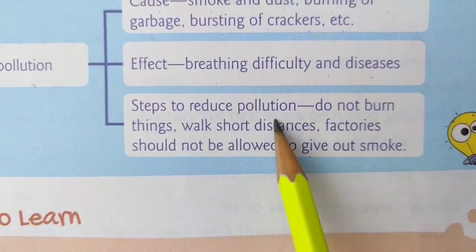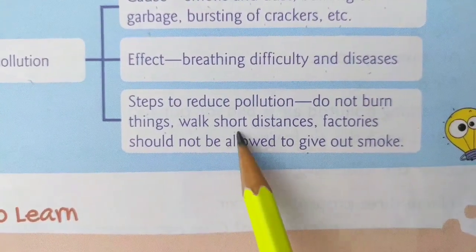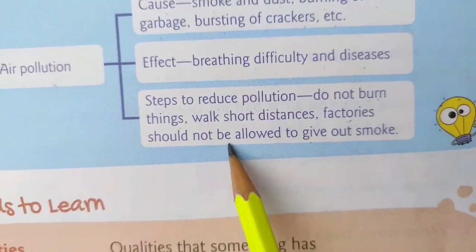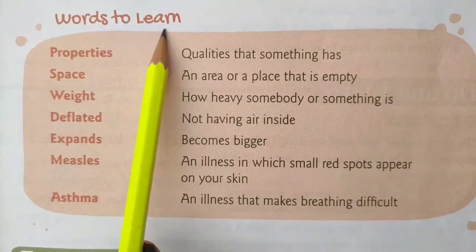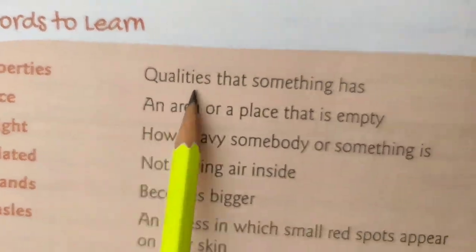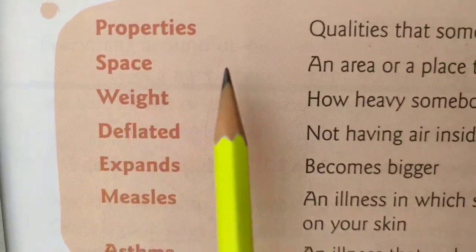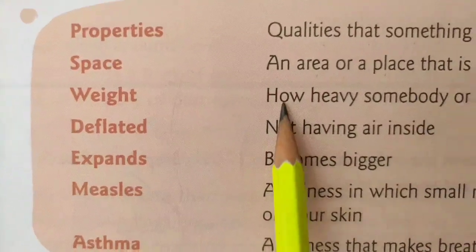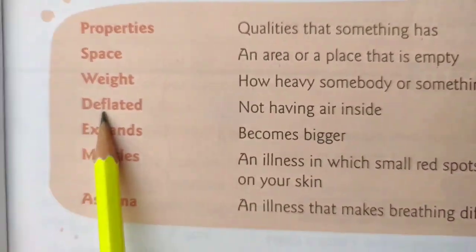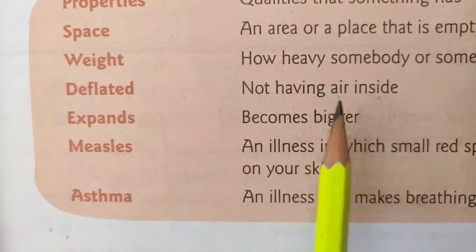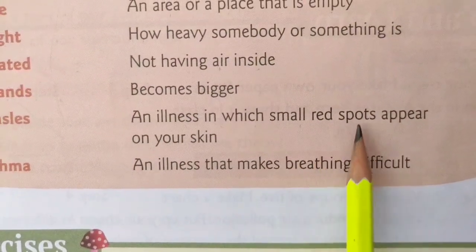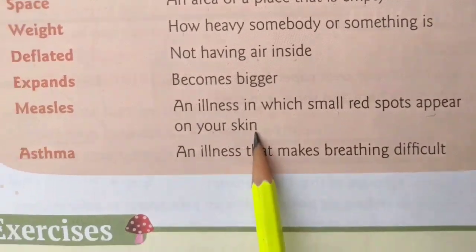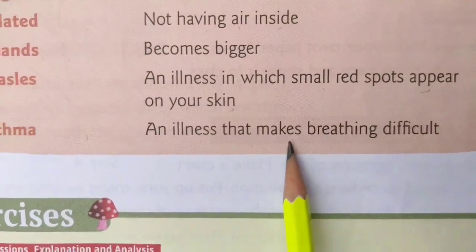Steps to reduce pollution: do not burn things, walk short distances, factories should not be allowed to give out smoke. Words to learn: 'properties' means qualities that something has; 'space' means an area or place that is empty; 'weight' means how heavy somebody or something is; 'deflated' means not having air inside; 'expand' means becomes bigger; 'measles' means an illness in which small red spots appear on your skin; 'asthma' means an illness that makes breathing difficult.